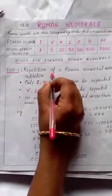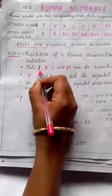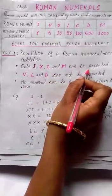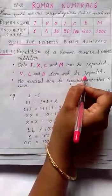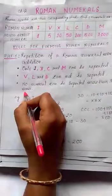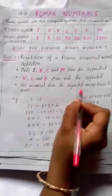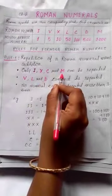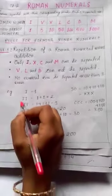Rule 1: Repetition of a Roman numeral means addition. Only I, X, C, and M can be repeated. V, L, and D cannot be repeated. Also, no numeral can be repeated more than three times. So I, X, C, and M are the numerals we cannot repeat more than three times.